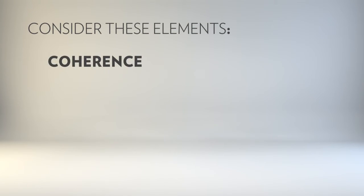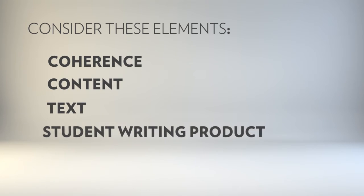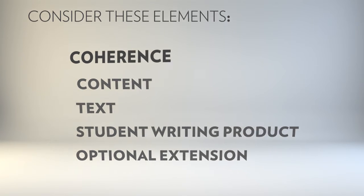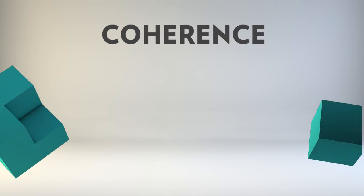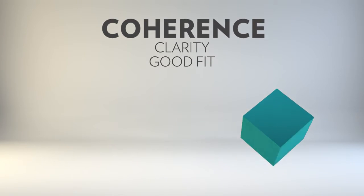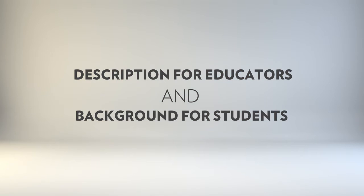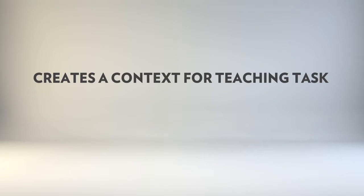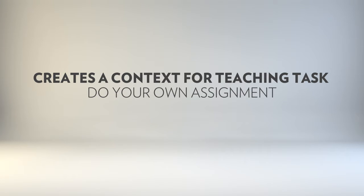Let's consider these elements: coherence, content, text, student writing product, and optional extension. A task that demonstrates coherence shows both clarity and a good fit or alignment between all of the components. The description for educators and background for students creates a context for the teaching task. The best way to check for coherence is to do your own assignment or ask a colleague to try it out.